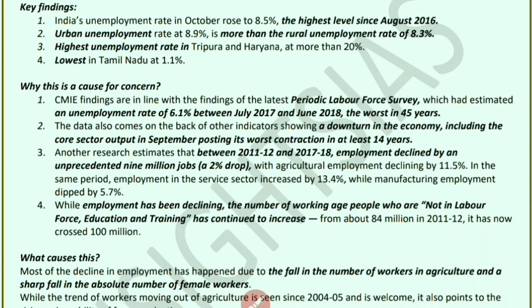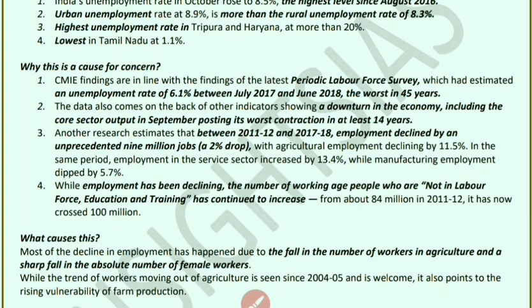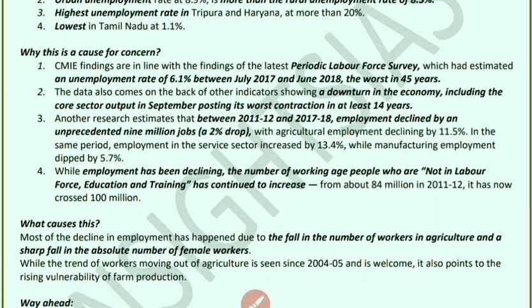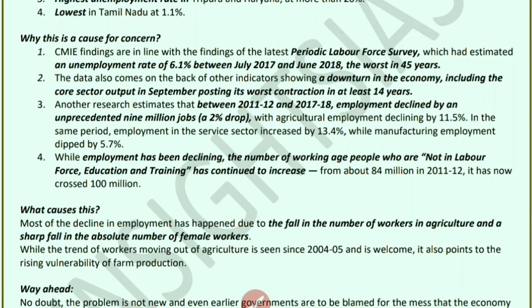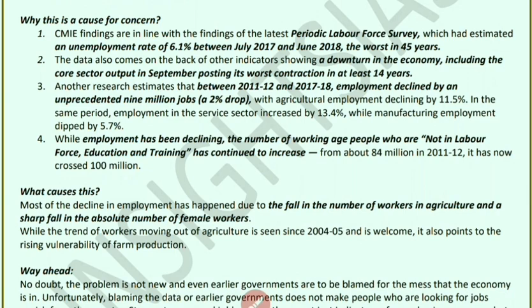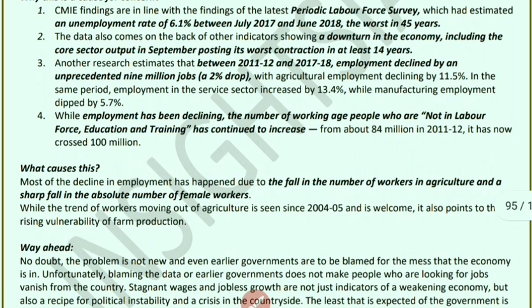According to the latest Periodic Labour Force Survey, the unemployment rate from July 2017 to June 2018 was 6.1% — the worst in 45 years. The economy is in a downturn; core sector output saw its worst contraction in at least 14 years in September. Research estimates show that from 2011-12 to 2017-18, employment declined by 9 million jobs, a 2% drop. Agricultural employment fell 11.5% while service sector employment rose 13.5% and manufacturing employment fell 5.7%.